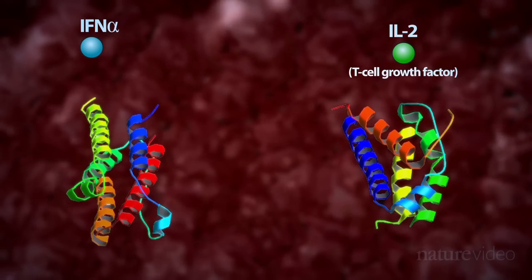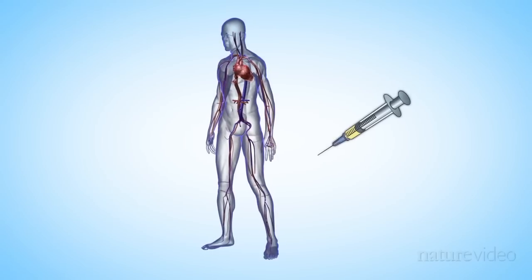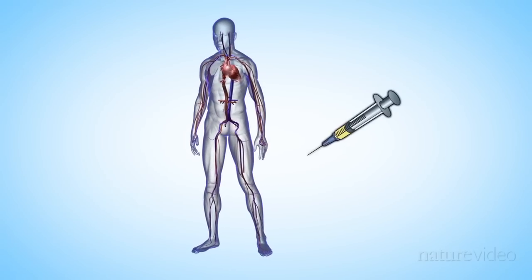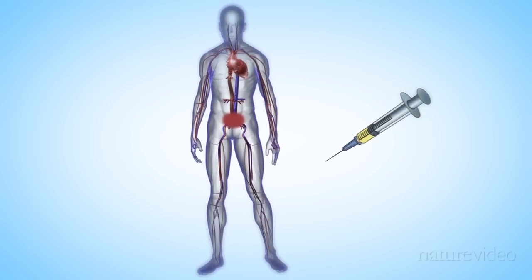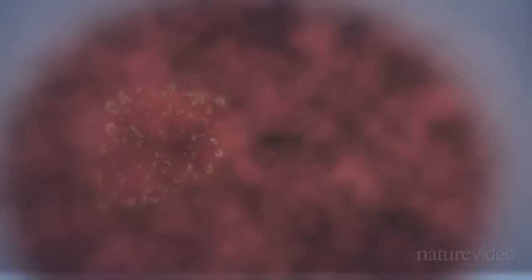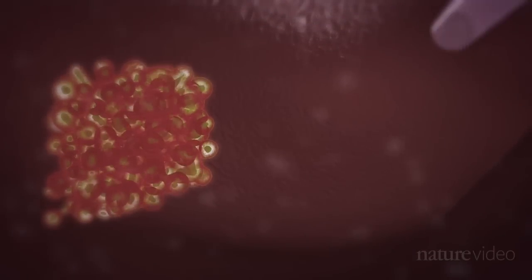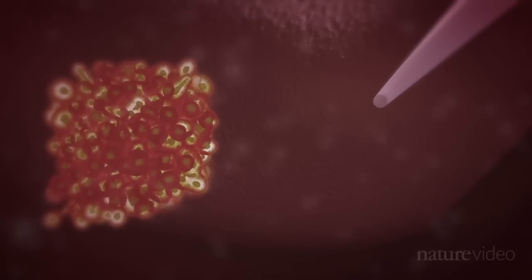Another way to stimulate immune cells in vivo is to inject bacteria, like William Coley did. This has led to a rather surprising use of the BCG vaccine. BCG is normally given to children as protection against tuberculosis.